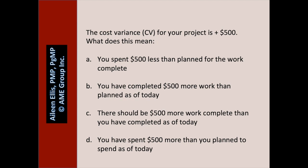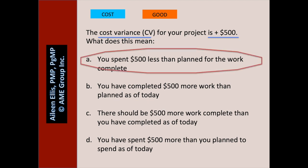The cost variance for your project is positive $500. What does this mean? Pause the video and answer the question. Is the question about cost or schedule? It's about cost. $500 positive — that's good. A: you spent $500 less than you planned for the work complete — that is what a cost variance of positive $500 means. B: you have completed $500 more work than planned as of today — B relates to schedule variance. C: there should be $500 more work complete than you have completed as of today — C relates to schedule variance. D: you have spent $500 more than you planned to spend as of today — D also relates to schedule variance. So A is correct.